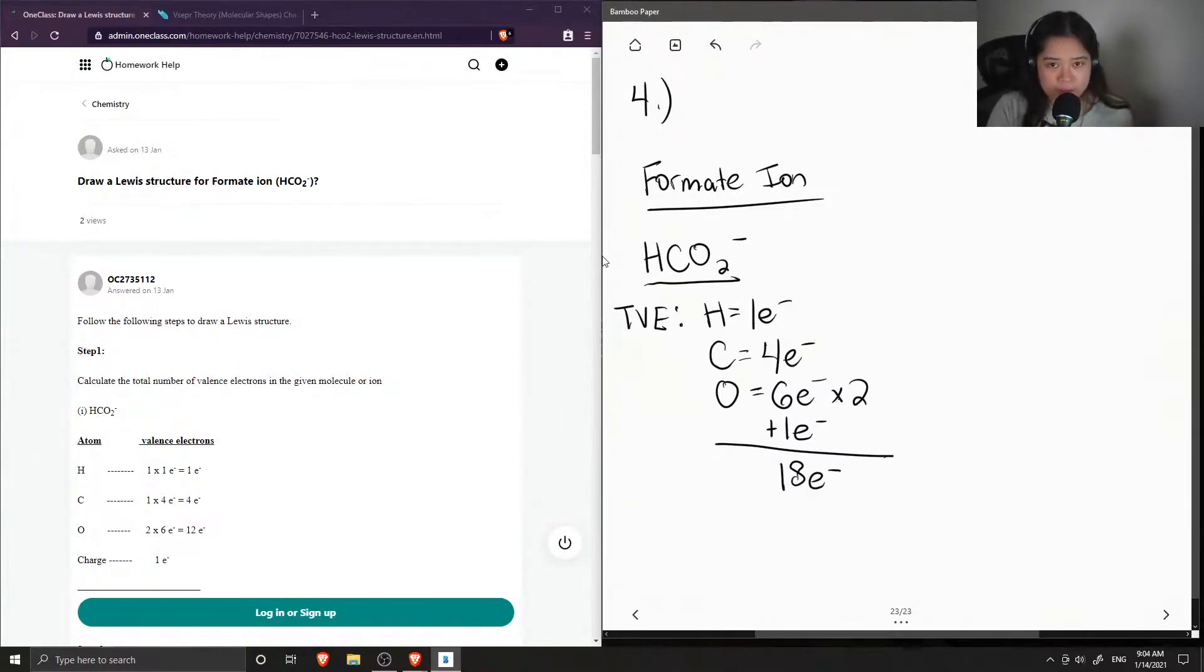Okay, so now let's try to write the Lewis structure for the formate ion. I'll start off with the carbon. So the carbon will most likely be single bonded with the hydrogen. And then I'm just going to draw single bonds to each of my oxygens. So notice that carbon doesn't have a full octet. So now I'm just going to make one of these oxygens have a double bond.